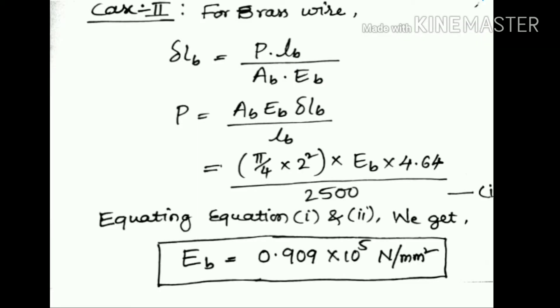Case 2 is for the brass wire. Again we are using the same equation and calculating P. This is equation number 2.